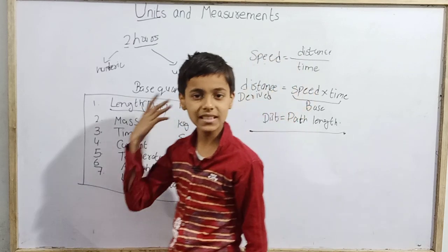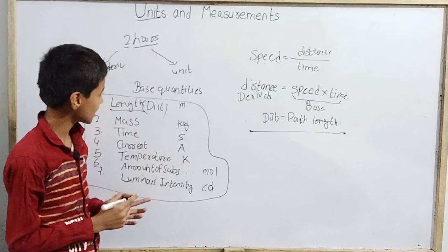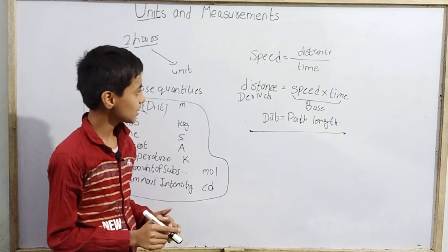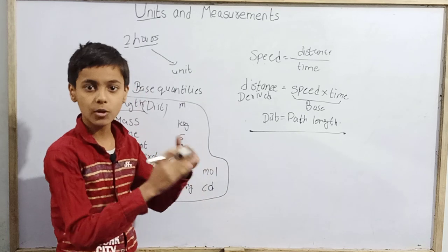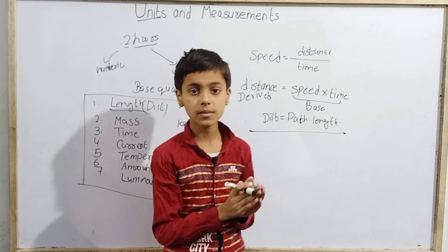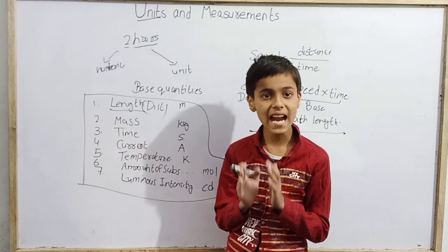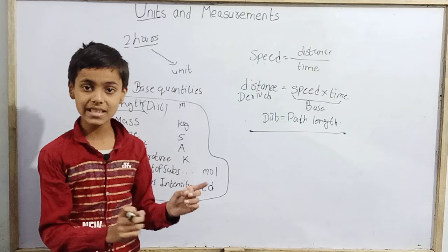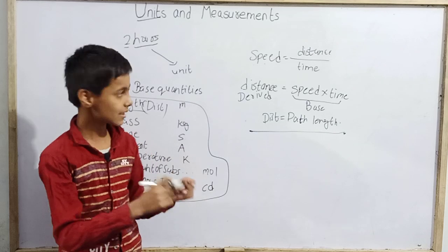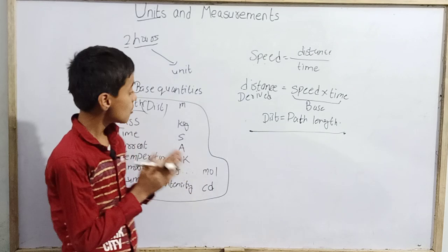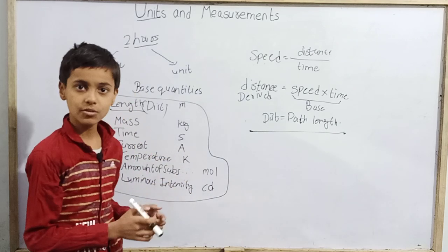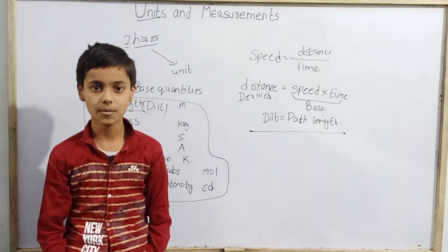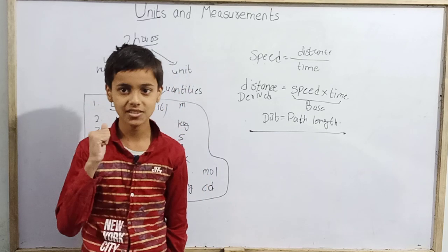These quantities all fall in the same category — length — so they are all fundamental quantities. That is all for today's topic: fundamental and base quantities, derived quantities, and correspondingly base units and derived units. Thank you!